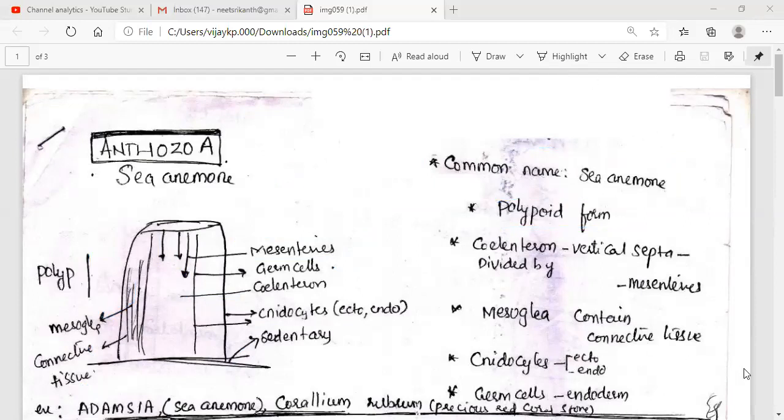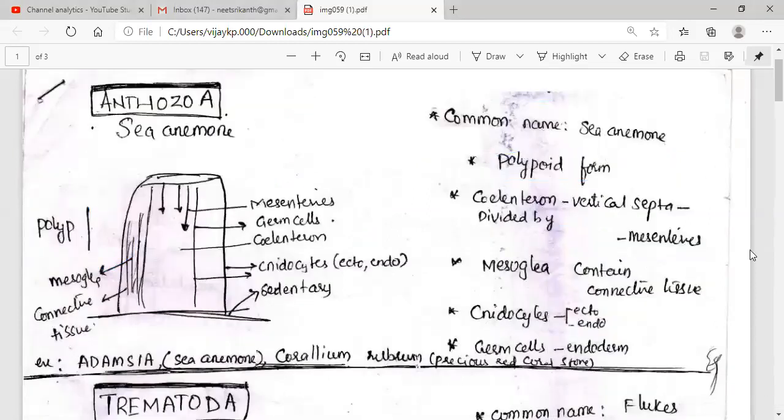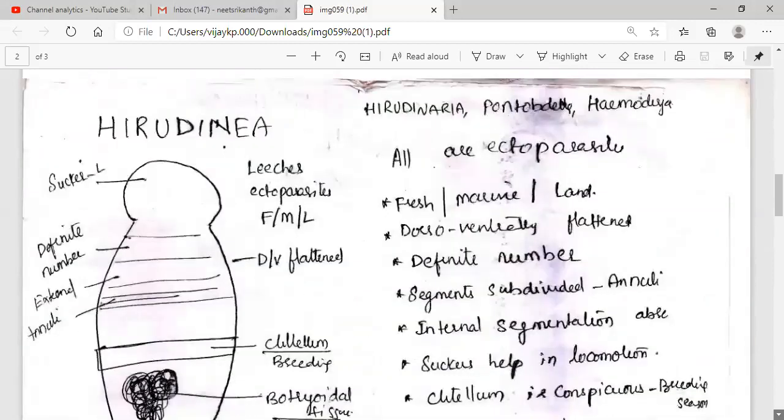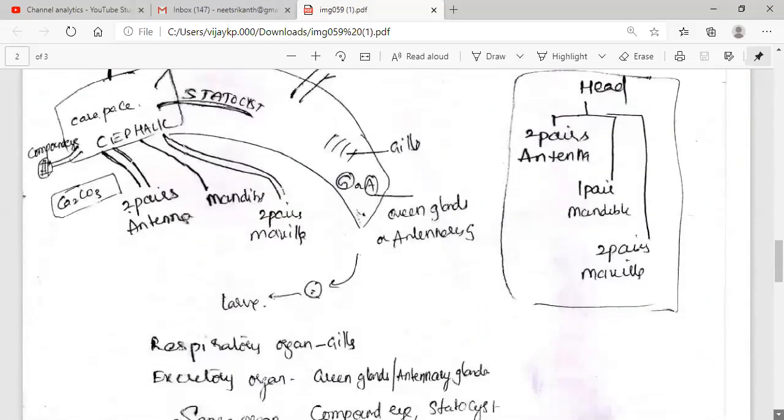So in that way, examples you need to remember: Adamsia, sea anemone; Corallium rubrum, the precious red coral stone; and Metridium, sea anemone; Gorgonia, sea pen; Pennatula, sea pen. And after that...